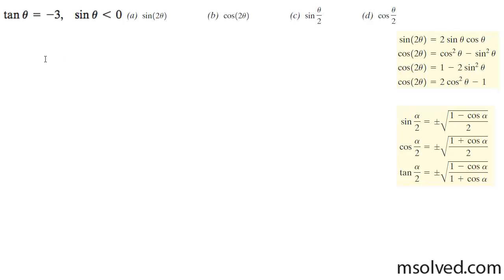Let's find the double angle of the sine and cosine, and then the half angle of the sine and cosine, for the tangent of theta equal to negative 3. Tangent equals y over x, which makes this equal to negative 3 over 1. Because sine is less than 0, tangent is either negative in quadrant 2 or quadrant 4, and because sine is negative, it has to be in quadrant 4.